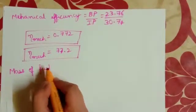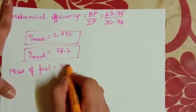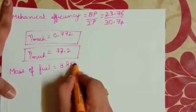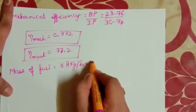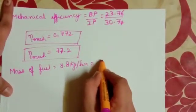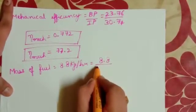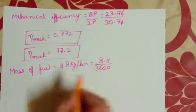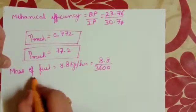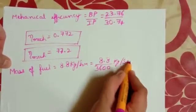Mass of fuel is equal to 8.8 kg per hour. You have to convert 8.8 kg per hour into kg per second — that is, you have to divide it by 3600 — then it will be in kg per second.